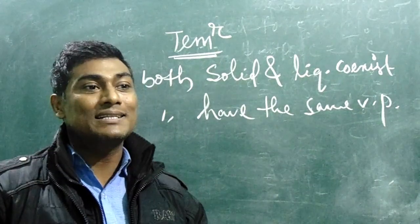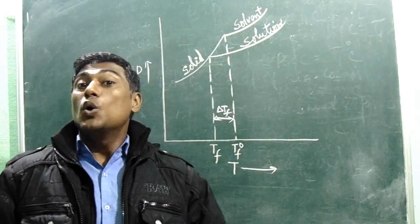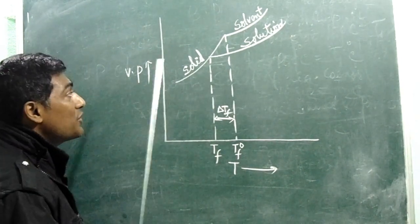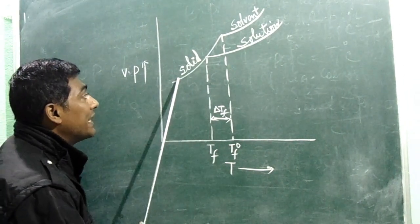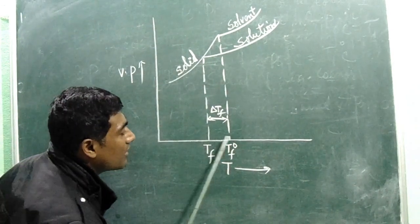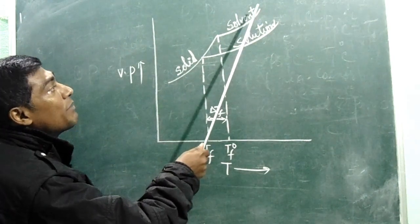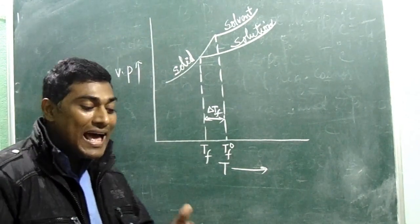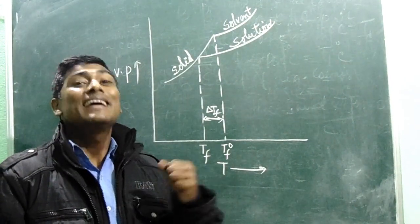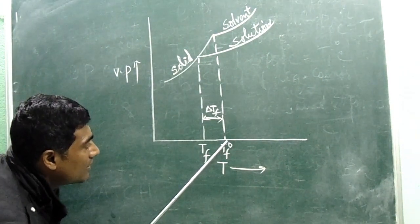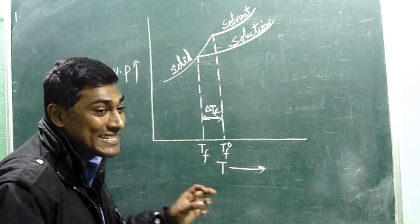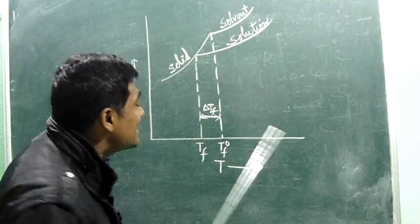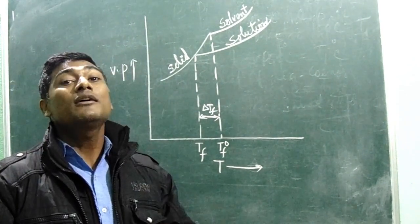We will now show this through a graph of vapor pressure versus temperature. The vapor pressure of the solid increases as temperature increases. In the other direction, the vapor pressure of the solvent decreases as temperature decreases. As we know, increasing temperature increases vapor pressure. The temperature where the vapor pressure of the solid and the pure solvent becomes equal is, by definition, the freezing point of the pure solvent.